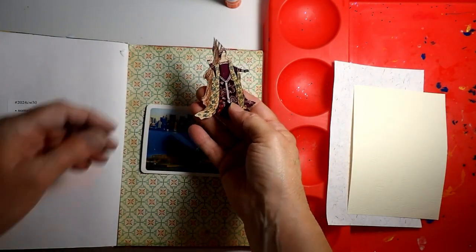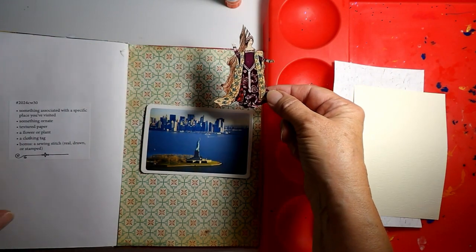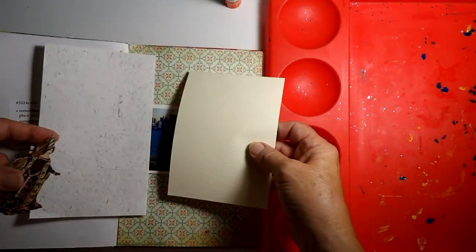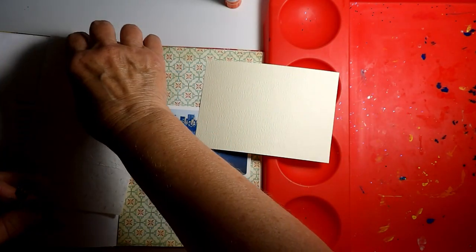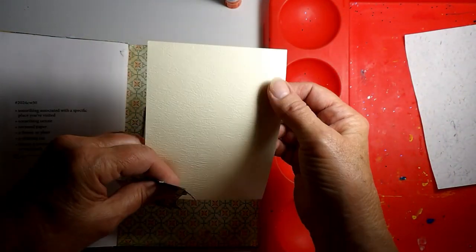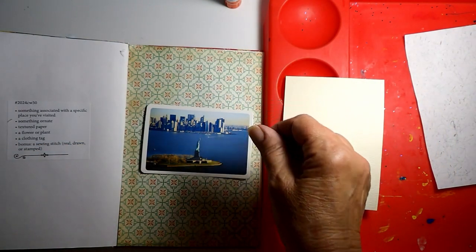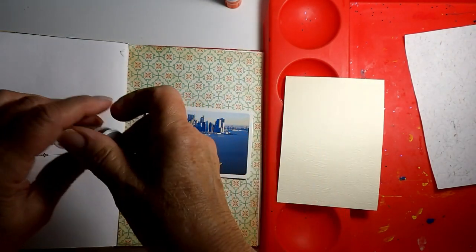Something ornate. I picked this little lady with very ornate clothing on. A textured paper. I have two types. I'm heading more towards this one and you can see it's just slightly textured. A flower or a plant. I have got some of these kind of neutral colored flowers here.